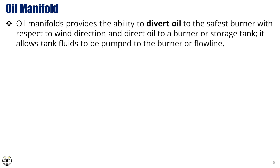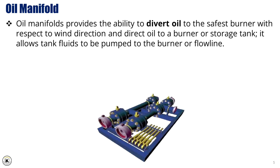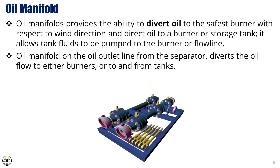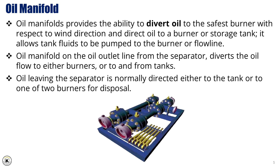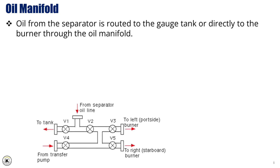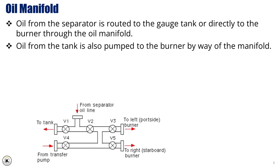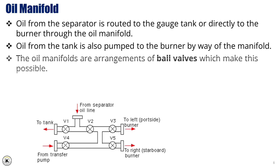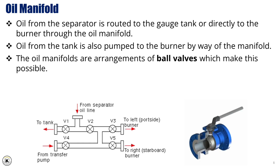Oil manifolds provide the ability to divert oil to the safest burner with respect to wind direction, and direct oil to a burner or storage tank. It allows tank fluids to be pumped to the burner or flow line. The oil manifold on the oil outlet line from the separator diverts the oil flow to either burners or to and from tanks. Oil leaving the separator is normally directed either to the tank or to one of two burners for disposal. Oil from the separator is routed either to the gauge tank for temporary storage or directly to the burner through the oil manifold system. Additionally, oil stored in the gauge tank can also be pumped to the burner, again passing through the manifold. The oil manifold itself is an arrangement of ball valves that enables flexible and controlled routing of the oil flow between the different system components.